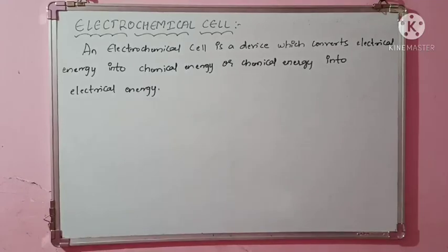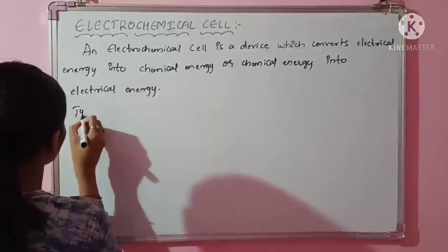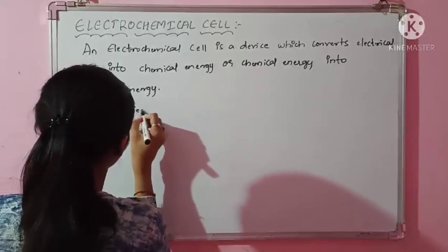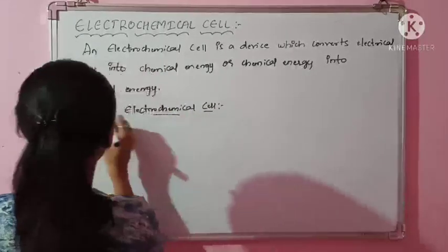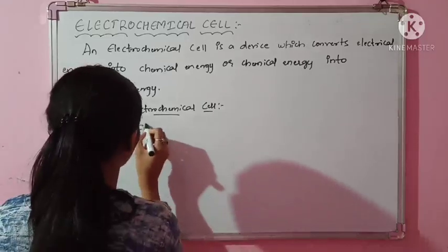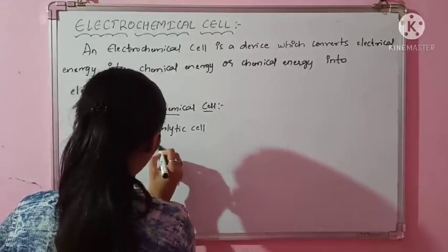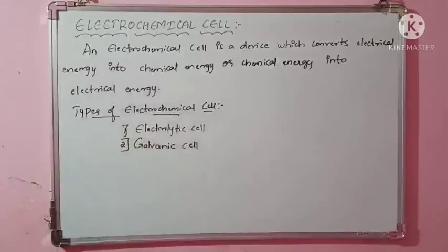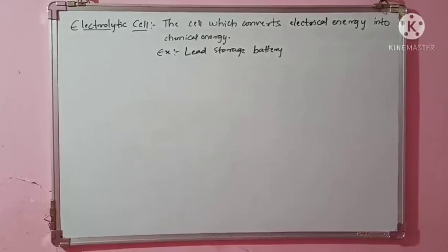Now let us learn the types of electrochemical cells. There are two types of electrochemical cells: one is the electrolytic cell and the other is the galvanic cell. Today we will understand the first one, that is the electrolytic cell.